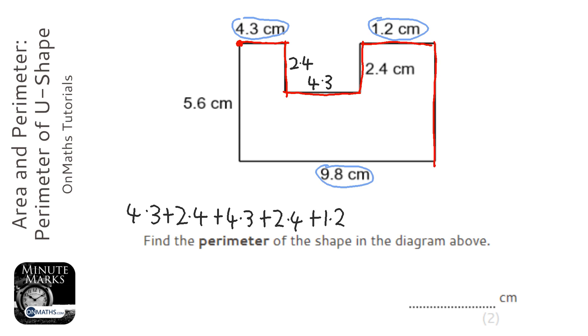Now this distance here is going to be the same as on the other side, which is going to be 5.6. So I'm going to add the 5.6, and then the last two are labelled on the diagram, so we've got 9.8, and then 5.6.